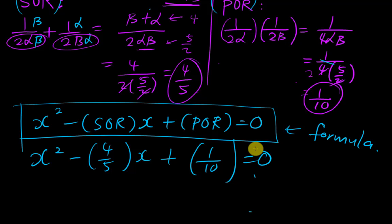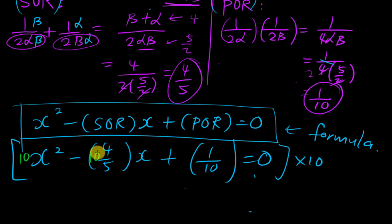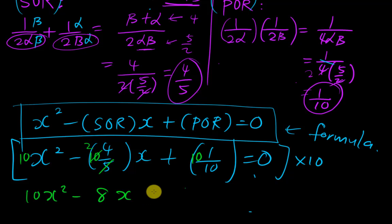To eliminate fractions, I multiply the whole equation by 10. Multiplying each term: 10x², then 10 times 4/5 gives 8, so minus 8x, and 10 times 1/10 gives plus 1, equals zero. So the new equation is 10x² minus 8x plus 1 equals zero. That's done.